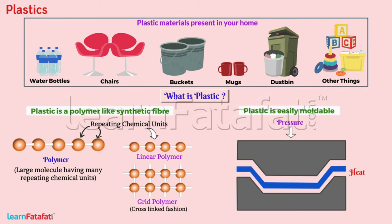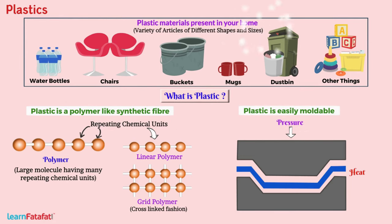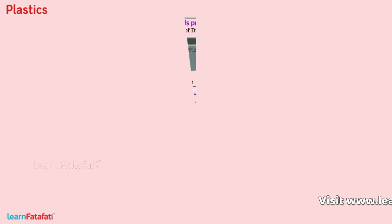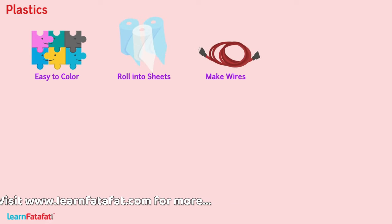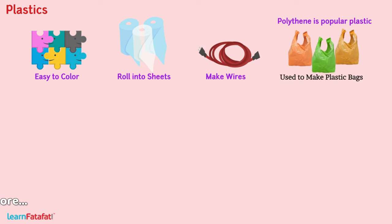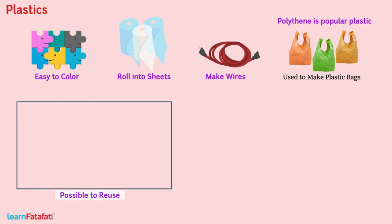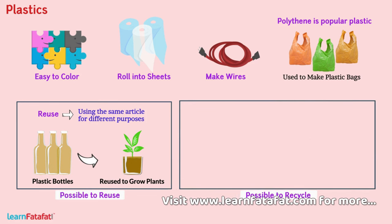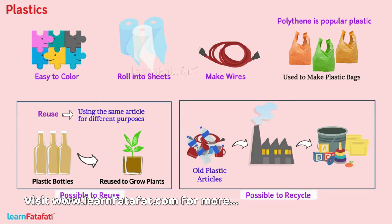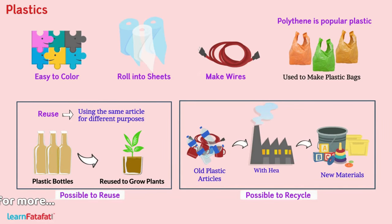This is the reason why we find a variety of articles of different shapes and sizes. It is easy to color plastic, roll it into sheets, or make wires. Plastic bottles can also be used to make plastic bags. It is possible to reuse plastic — reuse means we can use the same article for different purposes. For example, plastic bottles can be reused to grow plants. It is also possible to recycle plastic, which is a process that uses old plastic articles to make new materials with heat and pressure treatment.